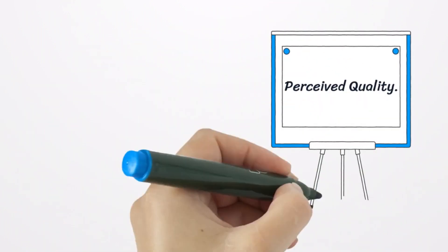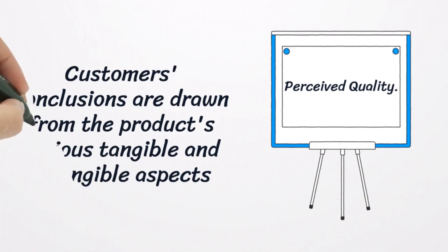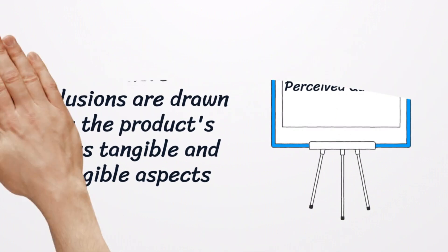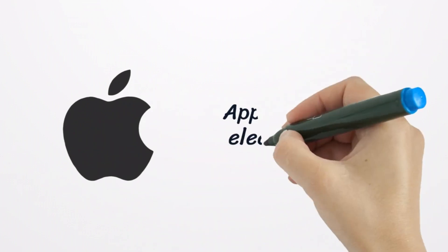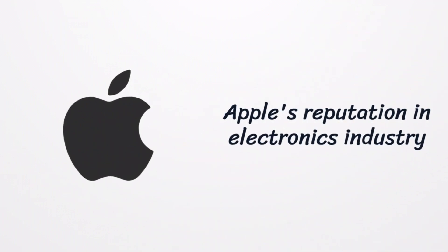Perceived quality is the eighth dimension. Customers' conclusions are drawn from the product's various tangible and intangible aspects, ranging from how heavy a laptop might be to its brand and associated advertising. Garvin said, reputation is the primary stuff of perceived quality. For example, people decide to buy Apple's products based on the reputation that the brand has created in the market over the years.